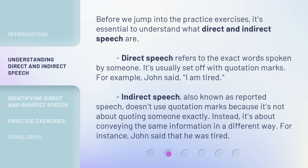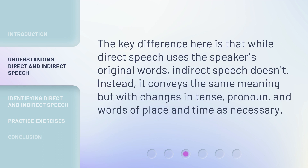Before we jump into the practice exercises, it's essential to understand what direct and indirect speech are. Direct speech refers to the exact words spoken by someone — it's usually set off with quotation marks. For example, John said, 'I am tired.' Indirect speech, also known as reported speech, doesn't use quotation marks because it's not about quoting someone exactly. Instead, it's about conveying the same information in a different way. For instance, John said that he was tired. The key difference is that indirect speech conveys the same meaning but with changes in tense, pronoun, and words of place and time as necessary.